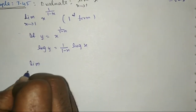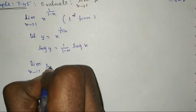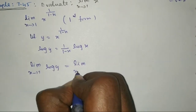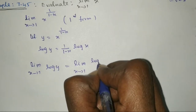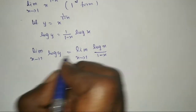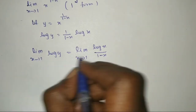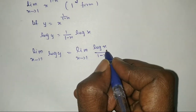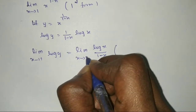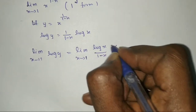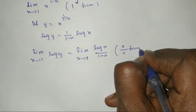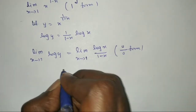Applying the limit as x tends to 1: log y equals the limit as x tends to 1 of log x divided by (1 - x). Applying the limit directly: log(1) = 0 and 1 - 1 = 0, so we have a 0/0 indeterminate form. We apply L'Hôpital's rule.